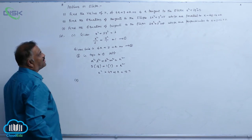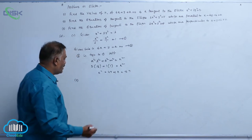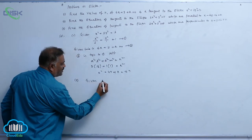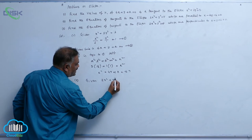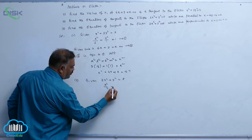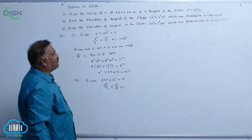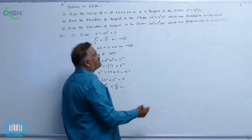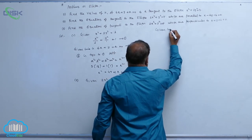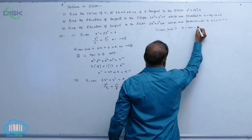Coming to the second question: find the equations of tangents to the ellipse. The ellipse equation is given as 2x squared plus y squared equal to 8, which can be written as x squared by 4 plus y squared by 8 equal to 1. We need to find tangents which are parallel to the given line x minus 2y minus 4 equal to 0.